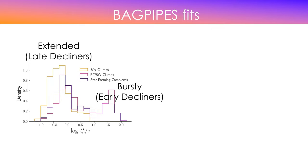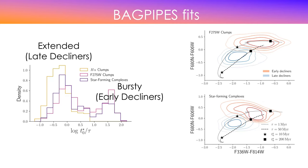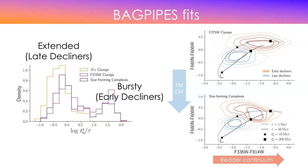If the code is doing something you don't understand, put yourself in the code's mindset: it's fitting colors. Looking at color-color diagrams — with H-alpha equivalent width on the Y-axis and broadband color on the X-axis — you need different values of tau to cover the whole diagram. If you only have simple stellar populations, you cannot have slightly redder broadband colors without losing your H-alpha, because you lose H-alpha as soon as you're older than 10 million years.